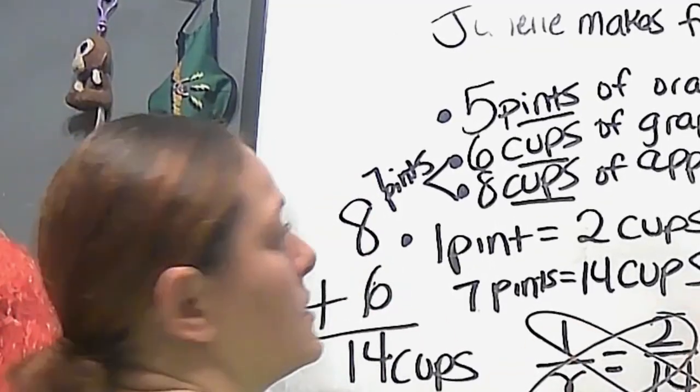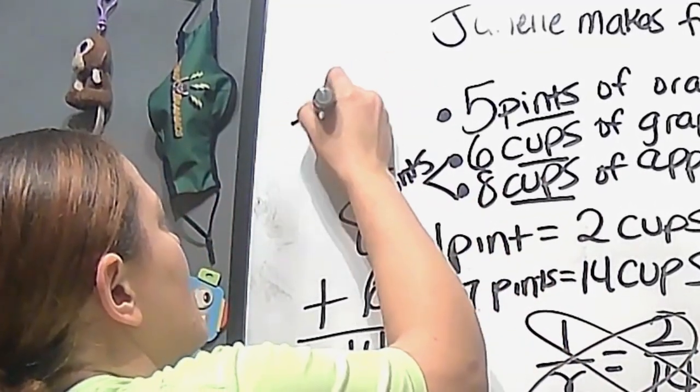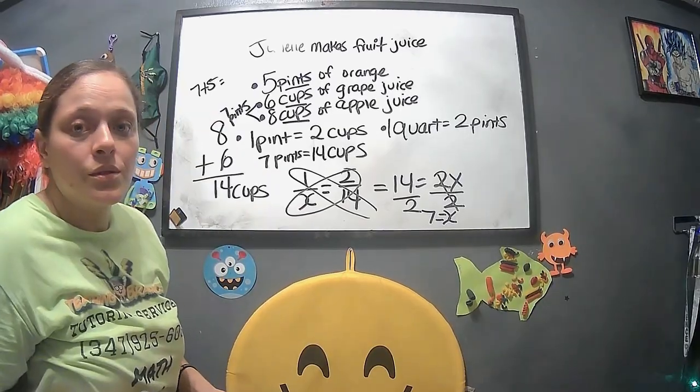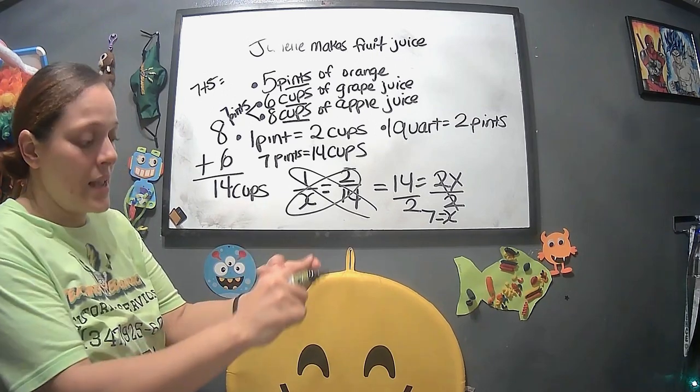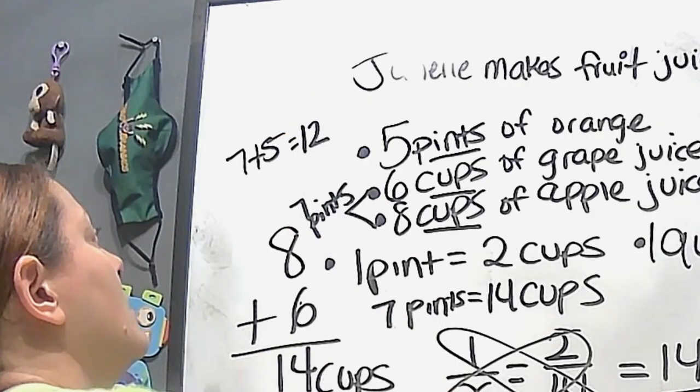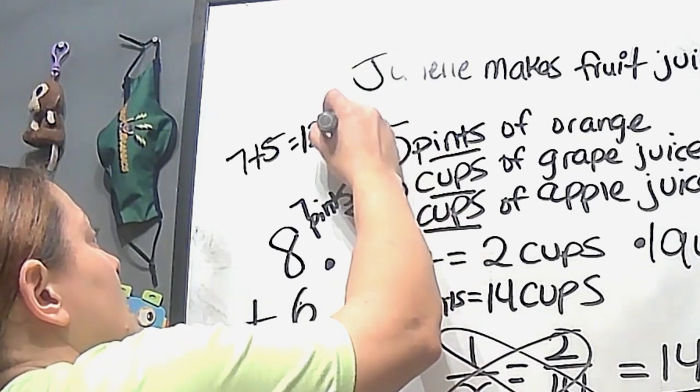So what you're going to do is you're going to multiply this way. So 14 equals 2 times X, which is like that. We're going to divide by 2. Divide by 2. Now you are going to get X equals 7, because 14 divided by 2 is 7. So that means that we have 7 pints. So I'll put that here. So we can put that here, 7 pints.